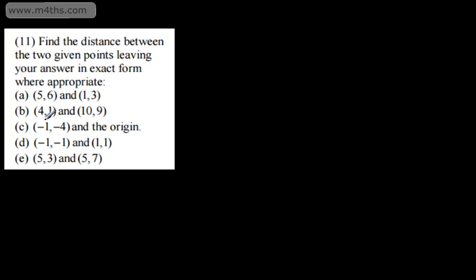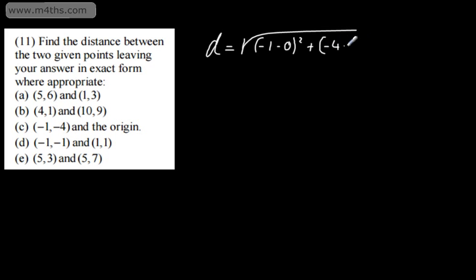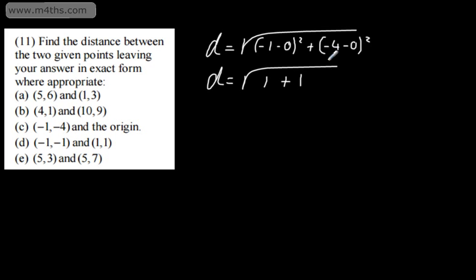This one is negative 1, negative 4 and the origin. The distance is going to be the square root of negative 1 minus 0, squared, plus negative 4 minus 0, squared. We can leave the zeros out. So that's the square root of 1 squared — which is 1 — plus 4 squared. Negative 4 squared is the same as 4 squared, giving us an exact answer of root 17.